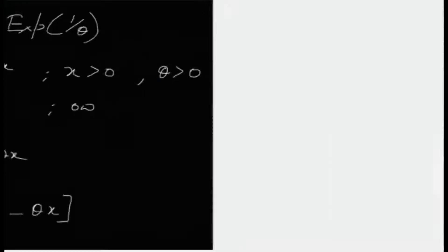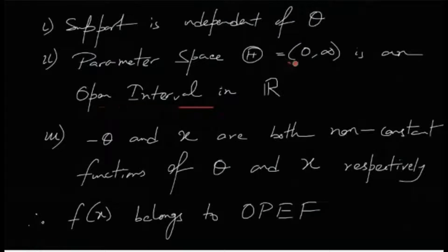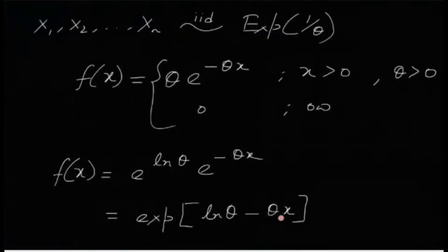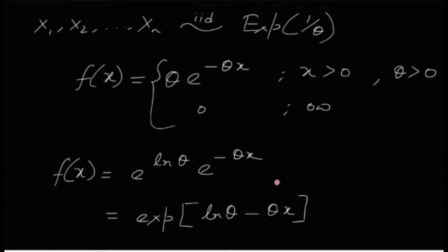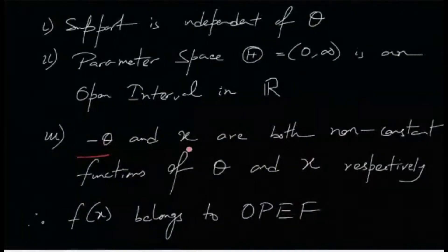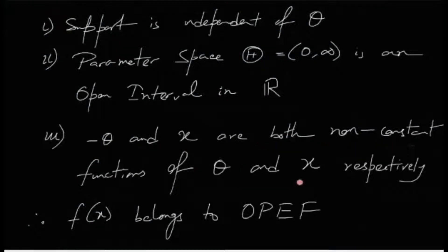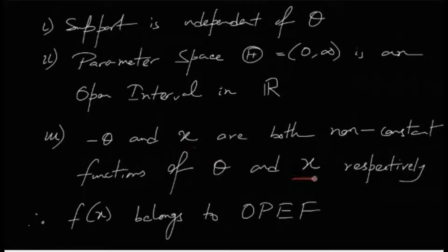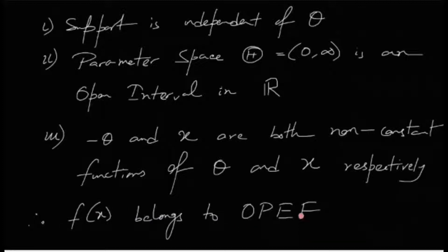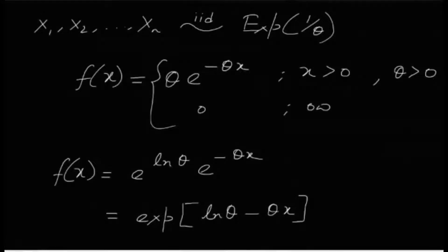The parameter space, the set of all values the parameter θ can take, is the set of all positive real numbers — it is also an open interval in ℝ. Finally, −θ and x are both non-constant functions of θ and x respectively. Therefore f(x) belongs to OPEF — that means f(x), this probability density function, belongs to the one-parameter exponential family.